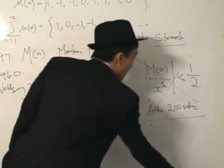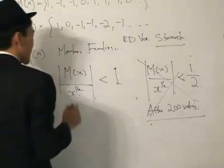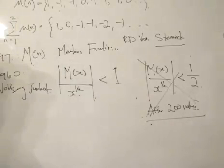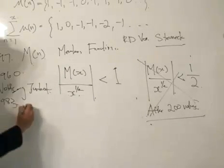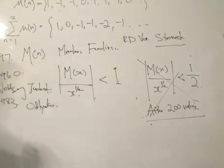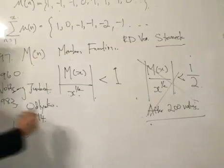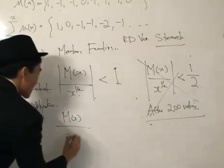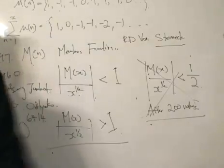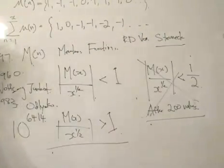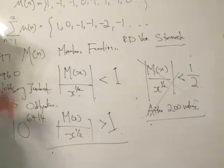However, if Sterneck failed, Mertens' conjecture still stood — that the Mertens' function divided by x to the power of half is less than 1. Would the conjecture stand? Only 20 years later, in 1983, Odlyzko found a number in the range of 10 to the power of 64, where the Mertens' function divided by x to the power of half turned out to be more than 1. That was how Odlyzko disproved Mertens' conjecture.